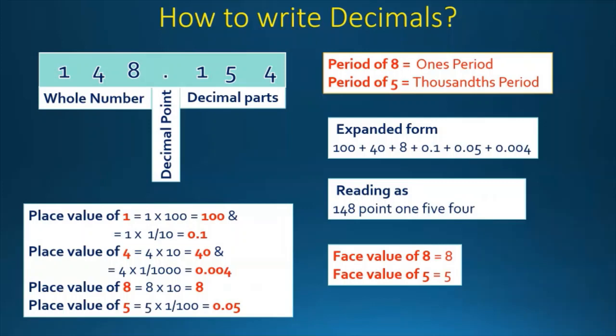Now let's find the place value of 4. The place value of 4 in the decimal part is equal to 4 times 1 by 1000, which equals 0.004. Now the place value of 8: it is 8 times 1, which is equal to 8. And the place value of 5 is equal to 5 times 1 by 100, which equals 0.05.